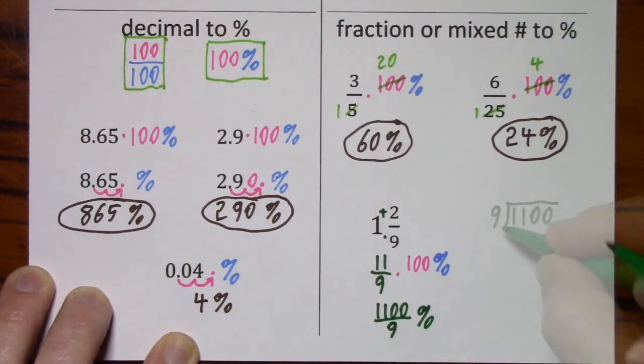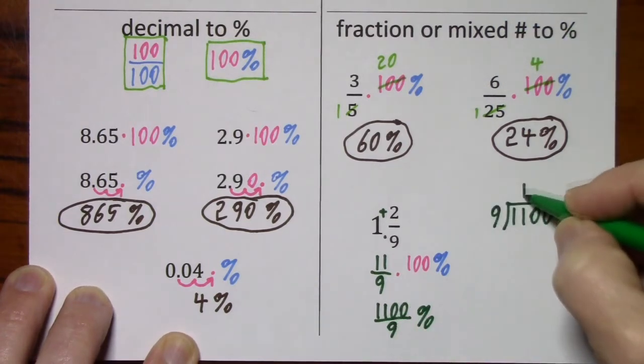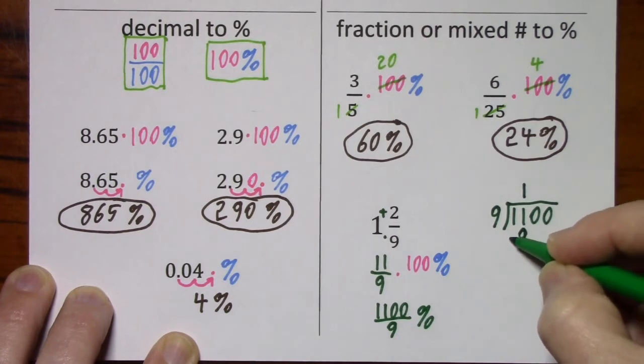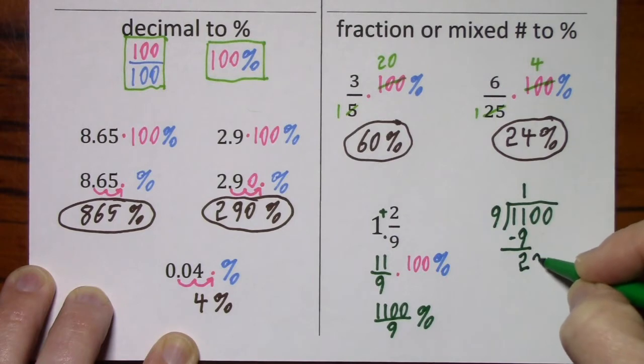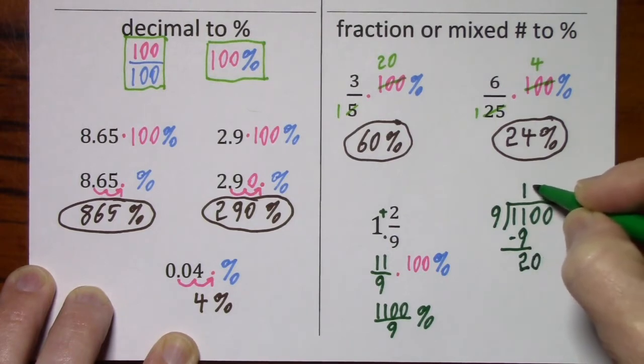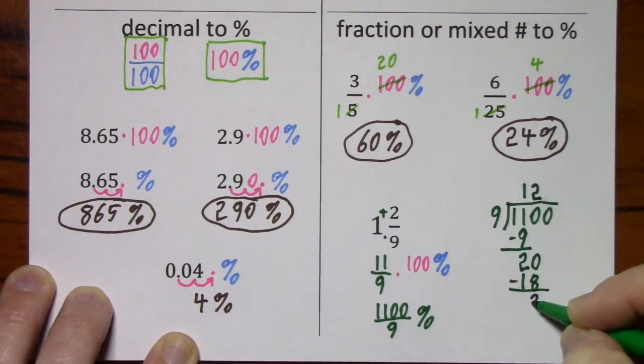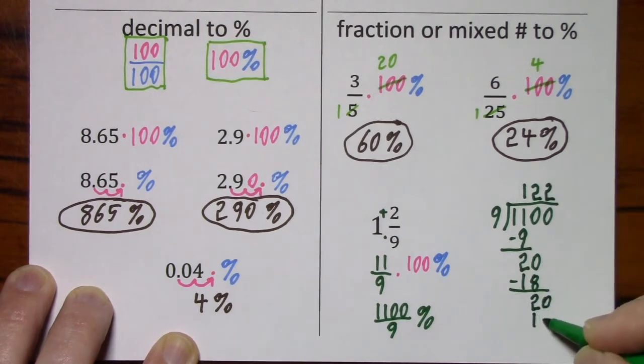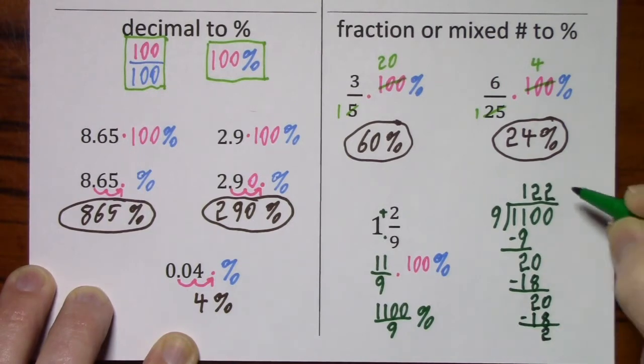They said they want a mixed number, so we're going to have to convert this. Notice there's 2 left over, so 122 and 2 ninths percent.